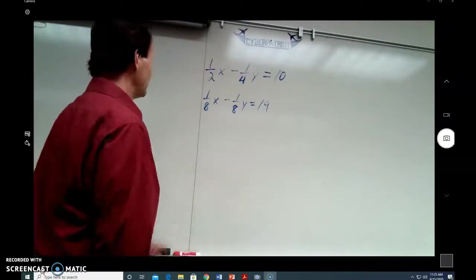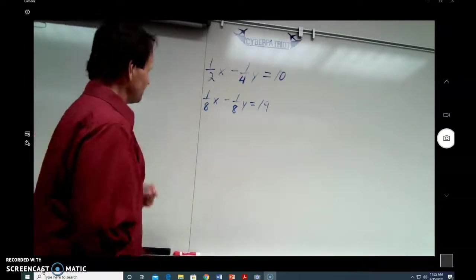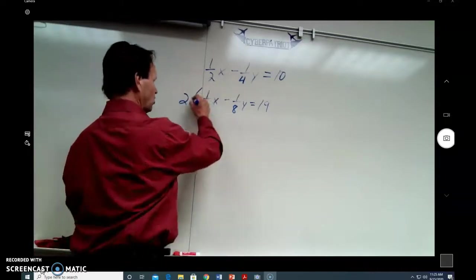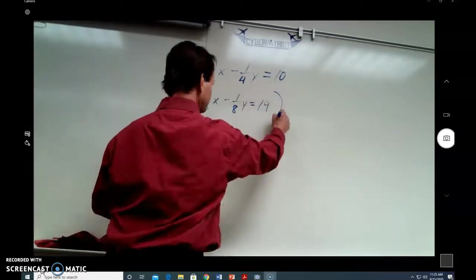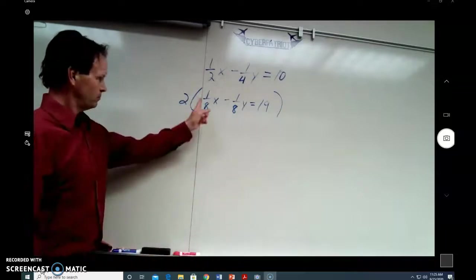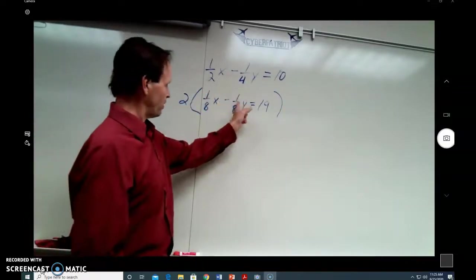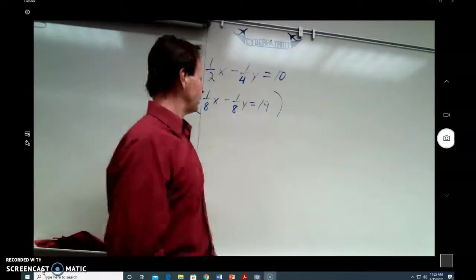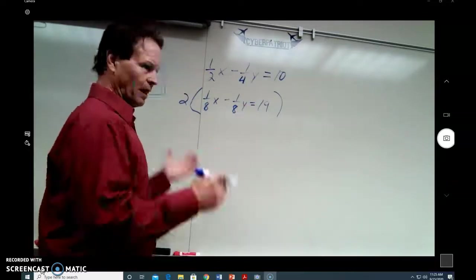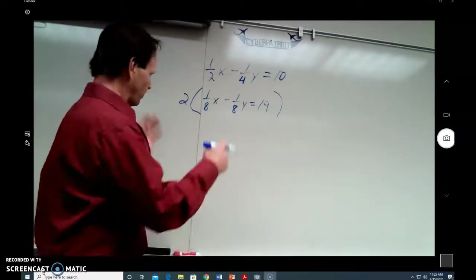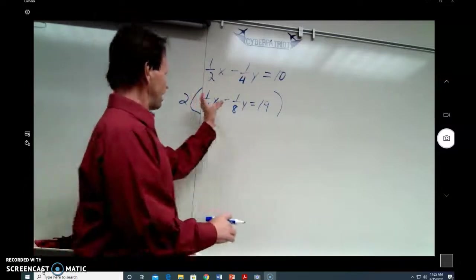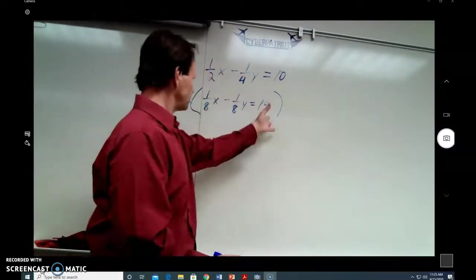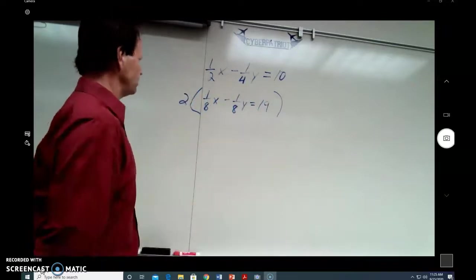But, you might see that if I multiply this whole equation by 2, multiply the 1 eighth x, multiply the negative 1 eighth y, multiply the 19th by 2, which I'm allowed to do. I can multiply it by 2. I can multiply it by 4. As long as I do that to the entire equation, both sides of the equal sign, I'm allowed to do that.